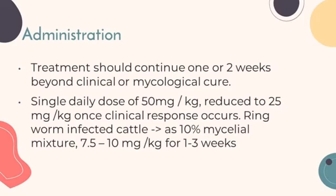A single daily dose of 50 mg per kg, reduced to 25 mg per kg once clinical response occurs. In ringworm-infected cattle, a 10% mycelial mixture at 7.5 to 10 mg per kg is used for 1 to 3 weeks.